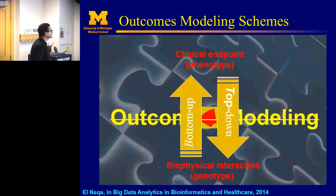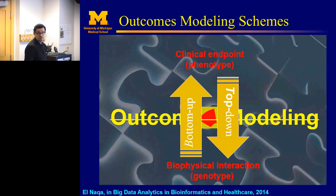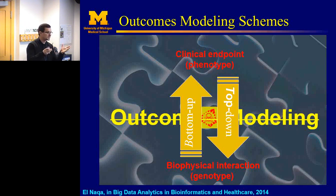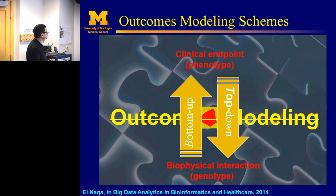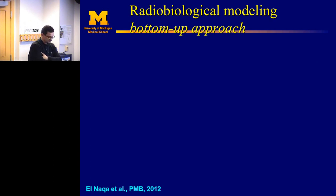One approach to outcome modeling is to think about it as top-down versus bottom-up. We can start with an integrated approach where we begin with the clinical endpoints and look for variables related to them, combining all kinds of information. Or we can go bottom-up, which is more of a mechanistic approach based on the type of interaction that's happening, and build multi-scale models based on our understanding of physics, chemistry, and biology. You can phenotype from the bottom-up or top-down to stratify patients, then use that to inform your mechanistic studies.